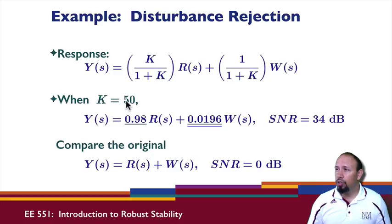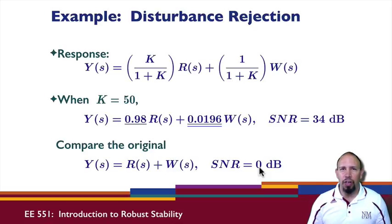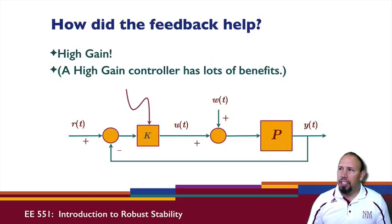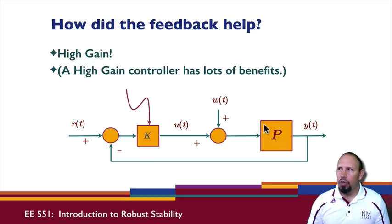That's definitely an improvement, and if we had chosen a larger value of k, we could have done even better. The original system had a signal-to-noise ratio of 0 dB, meaning the signal and noise had the same weighting. With k equal to 50, the signal has about 50 times greater impact than the disturbance. In both cases, we used feedback, and a high gain in the loop provided significant benefits — it helped with uncertainty in the plant and also with disturbances. That's the basic idea behind what we want to accomplish in the midst of an uncertain system.